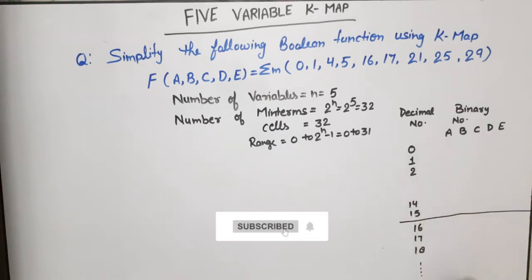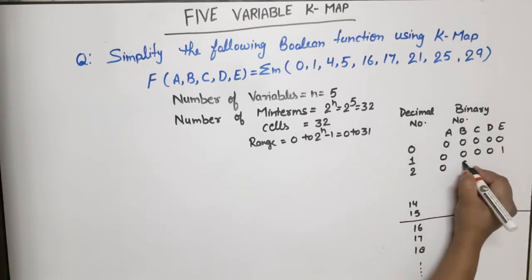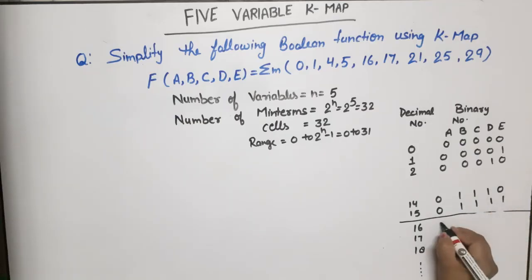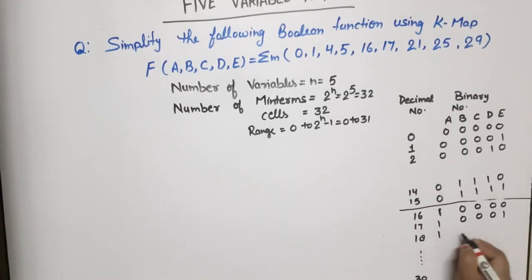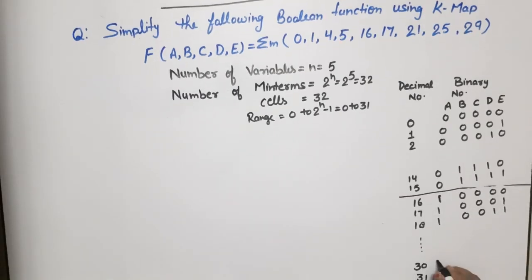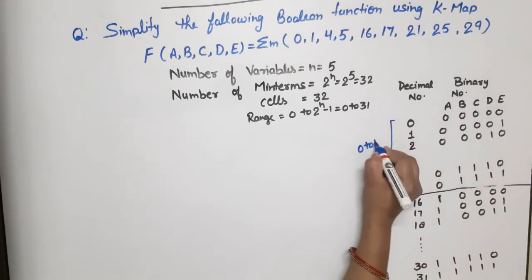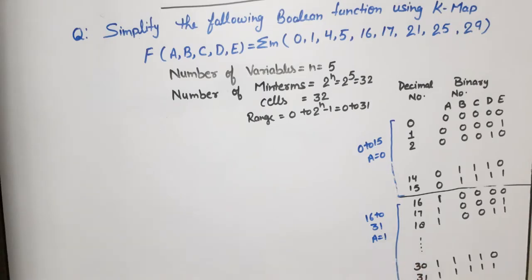Now let us convert some decimal numbers to binary in 5 variables. For example, 0 in 5 variables is 00000; 1 is 00001; 2 is 00010; 14 is 01110; 15 is 01111; 31 is 11111. The key observation is: if you look at the first bit (A), for numbers 0 to 15, A is equal to 0 for all 16 combinations. Similarly, for 16 to 31, A is equal to 1 for all 16 combinations.